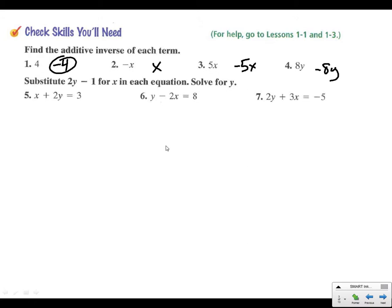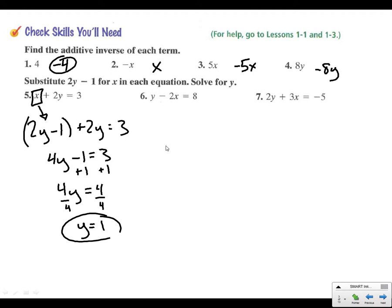For 5, 6, and 7, substitute 2y minus 1 in for x and then solve for y. So I'll do the first one with you. Instead of x sub in 2y minus 1, put it in parentheses. So that's what x is. And then everything else the same. Plus 2y equals 3. Let's clean this up. 2y plus 2y is 4y. We're going to add 1 to both sides. So 4y equals 4. So we're going to divide both sides by 4 and y equals 1. Pause the video. Take a minute. See if you can get 6 and 7.